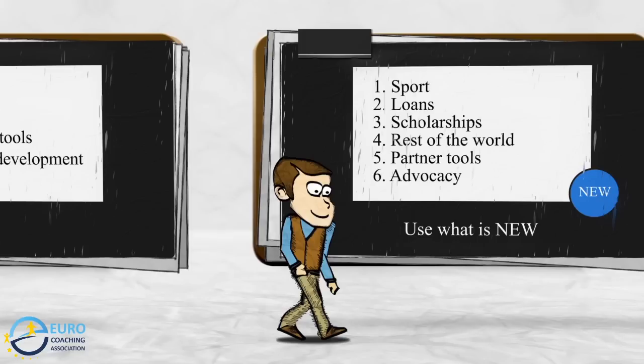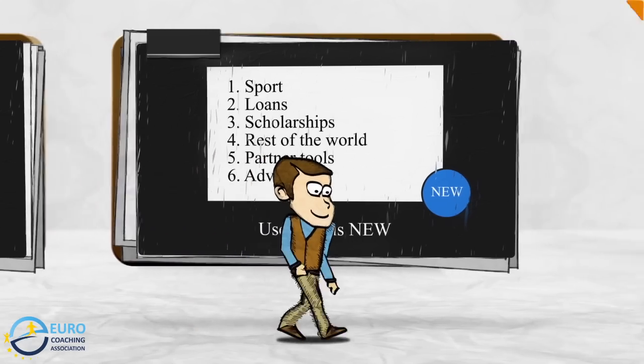It will be a good idea to use the new dimensions of the program when you apply on the first deadline. As always with new things, the competition will be lower until people understand how they work. You can write more projects on sports, benefit from scholarships and loans, profit from more projects with partners outside Europe. There are several new tools for finding partners for sport or lifelong learning projects, and there is a larger budget for advocacy projects.